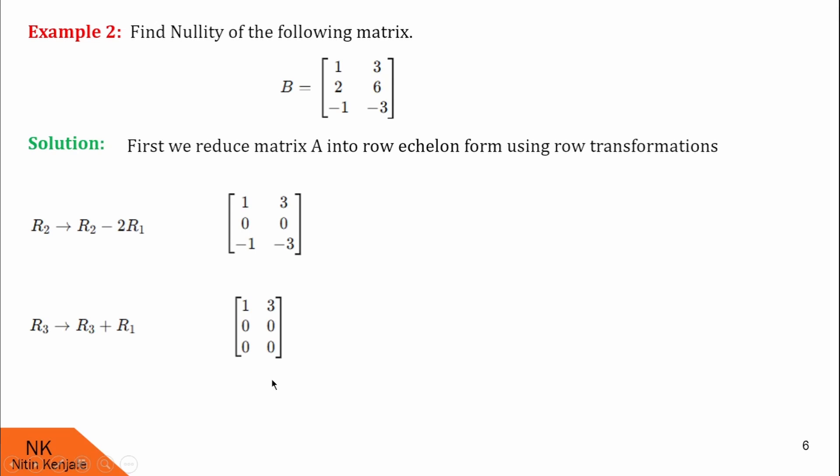This matrix cannot be further reduced. So we stop the transformation and count the number of non-zero rows. Since number of non-zero rows are 1, therefore its rank is 1. Now we count the nullity using formula number of columns minus rank, which is 1 here. Therefore, rank of this matrix is again 1. I hope you understood this example.